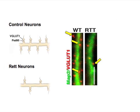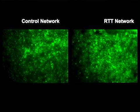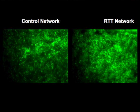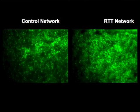In addition, Rett neurons displayed fewer excitatory synapses, visualized using specific antibodies against glutamatergic synaptic markers, here shown by yellow arrows. Finally, we detected altered calcium transients and spontaneous postsynaptic currents, confirming that Rett neurons formed a deficient neuronal network in culture.